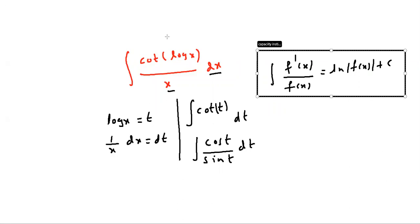Whenever you find this, directly you can write here. Differentiation of sin t is cos t. Denominator differentiation is numerator. Directly you can use this.